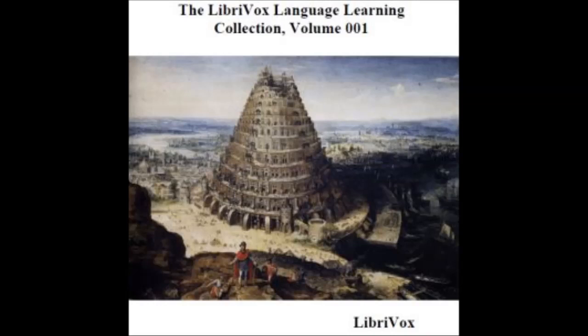Beginning Latin, Lesson One, by John Edmund Bars. Recorded for the LibriVox Language Learning Collection, Volume One. Read by Nicholas James Bridgewater. This is a LibriVox recording. All LibriVox recordings are in the public domain. For more information or to volunteer, please visit LibriVox.org. Lesson One: Pronunciation. One: The Alphabet. The Latin alphabet is the same as the English, without...